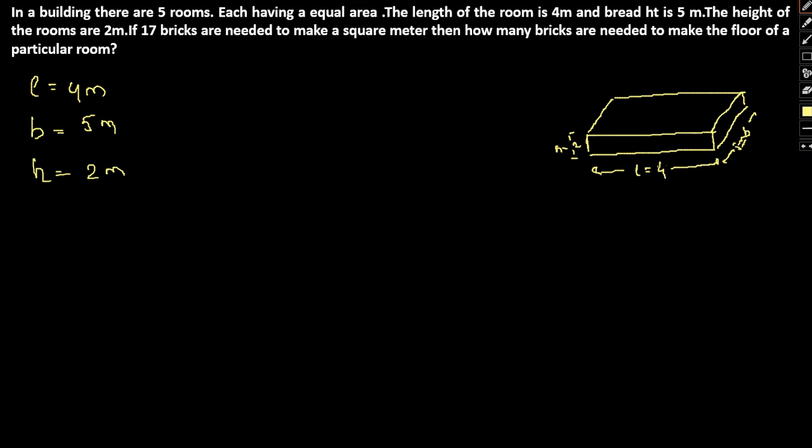Now, if we are looking to find the area, the total surface area of a cuboid is always given by 2 into LB plus BH plus LH. Applying the same here, we have TSA equals 2 times (length into breadth being 20, breadth into height being 10, and length into height being 8). That is 2 times 38, which is 76 square meters.